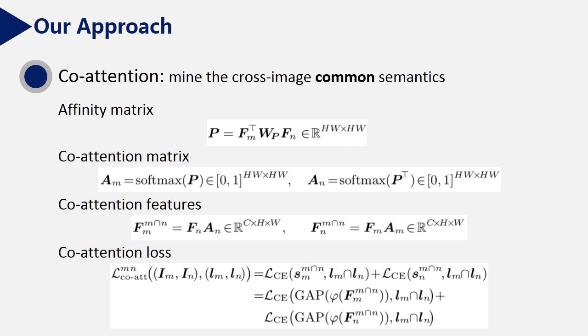Then, we normalize the P by row or by column and obtain am and an. So that am and an contains the information of co-attention in their rows or in their columns, respectively. Next, we generate co-attention features. Those features focus only on common objects between image im and image in. So the common class is used to supervise the learning of co-attention features.